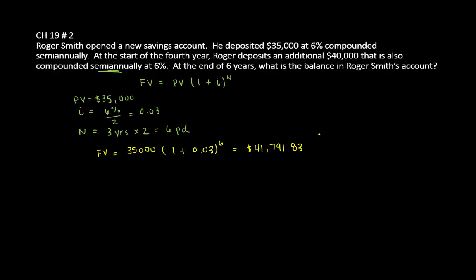Now we're not done here. We have to factor in the next three years in addition to the payment that he made. So we're going to add $40,000 to the $41,791.83, and that will give us $81,791.83 as the new PV.